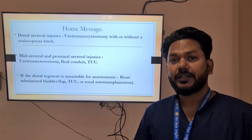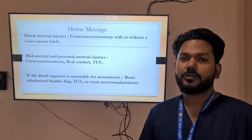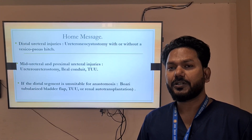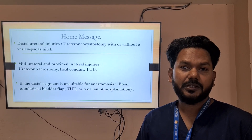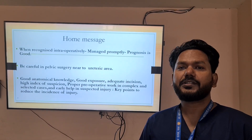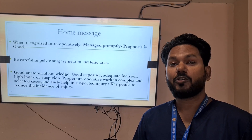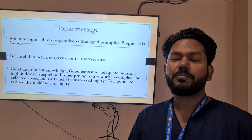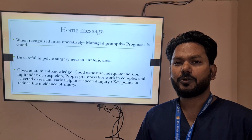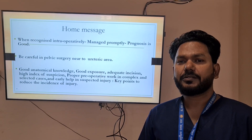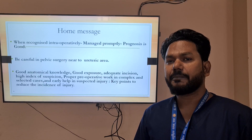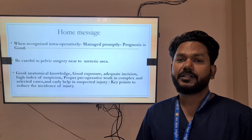In summary: for distal ureteral injury, ureteroneocystostomy with or without a psoas hitch is the preferred option. For mid and proximal ureteral injury, ureteroureterostomy, ileal conduit, and trans-ureteroureterostomy are the options. If the distal segment is unsuitable for anastomosis, Boari flap, trans-ureteroureterostomy, or renal autotransplantation may be considered. When ureteric injury is recognized intraoperatively and managed promptly, the prognosis is always good. Be very careful in pelvic surgery, as more than 50 percent of ureteric injuries occur in obstetric and gynecological surgery. Good anatomical knowledge, adequate exposure, appropriate incision, high index of suspicion, proper preoperative workup in complex cases, and early help in suspected injury are the key points to reduce the incidence of injuries. Thank you so much.